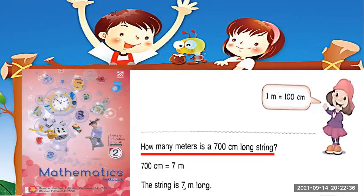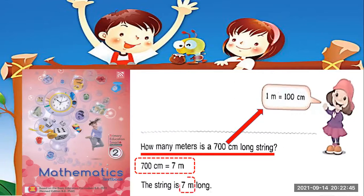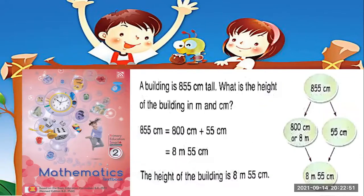Therefore, the string is 7m long. Now the next example: a building is 855cm tall. What is the height of the building in meters and centimeters?